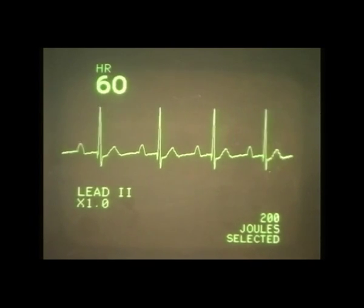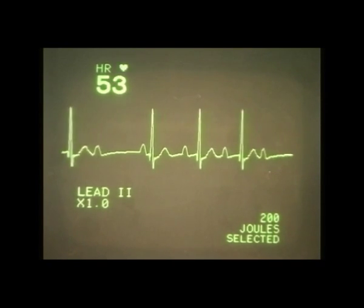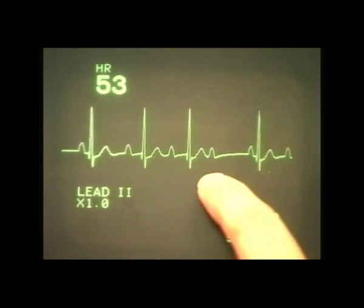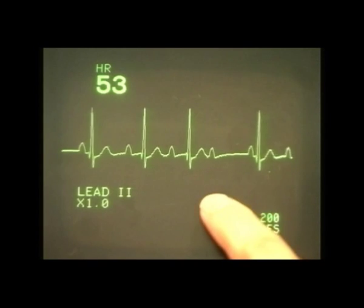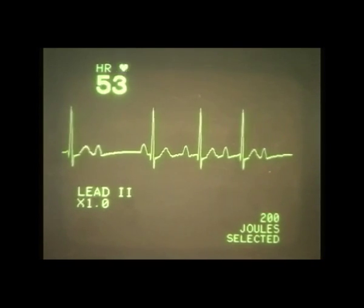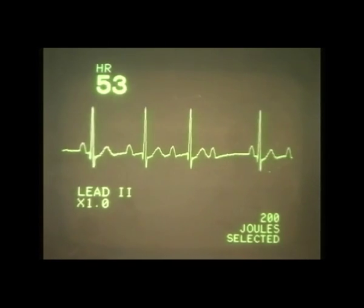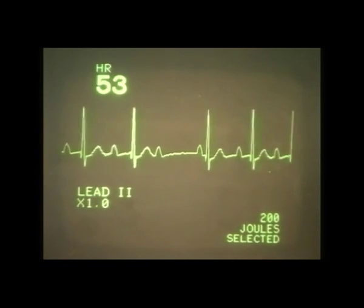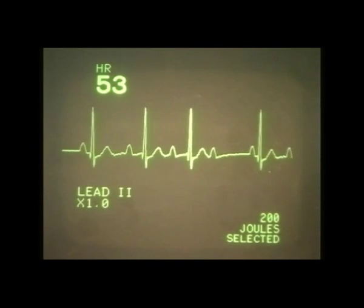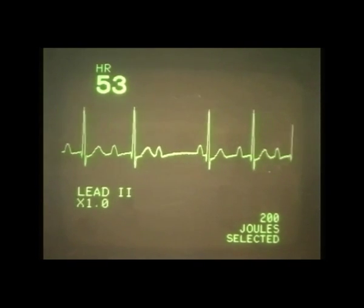The second heart block is what we call second-degree Mobitz type 1, or Wenckebach. What we see here is a normal PR interval that starts to get progressively longer over several beats, as in a first-degree block, until a QRS complex is dropped altogether. Then it goes back and starts again with a normal and then increasing PR interval until the next beat is dropped. This is normally a conduction problem in the AV node.